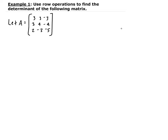First, I want to divide the first row by three. So that's going to be 1/3 times row one, and store that result in row one. So we're going to get: 1, 1, negative 1. Then we get 3, 4, negative 4. And 2, negative 3, negative 5.